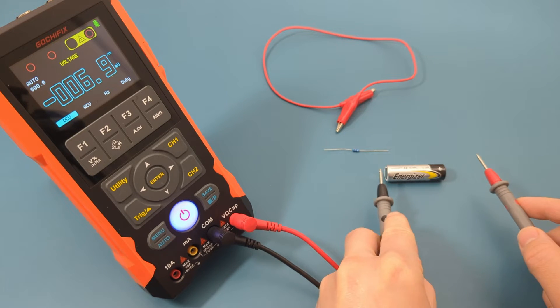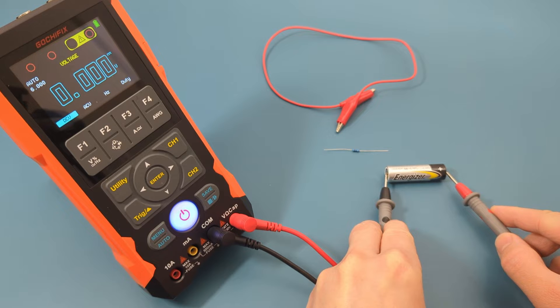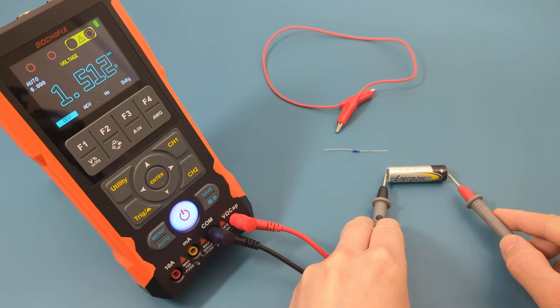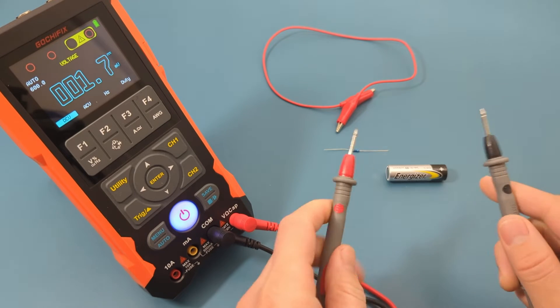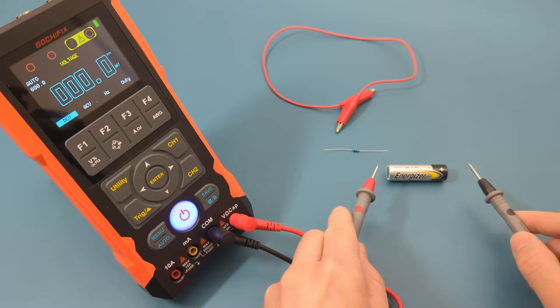Touch the black probe lead on the battery's negative terminal and the red probe lead on the positive terminal. The reading shows around 1.5 volts, indicating that the battery is good. If you reverse the leads, you should get the same number but it will be negative.